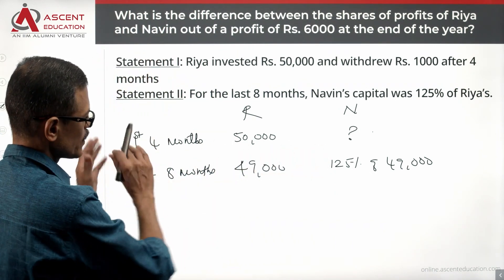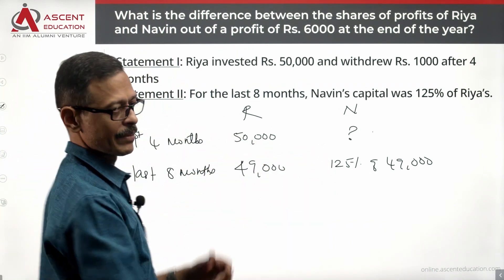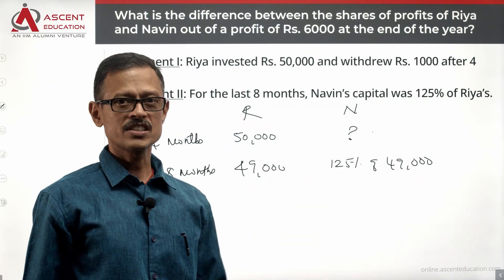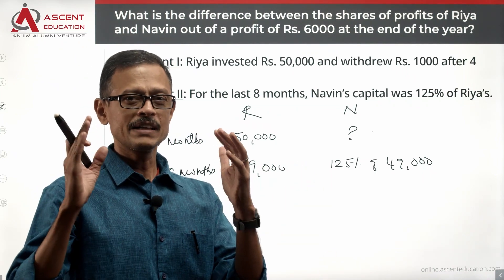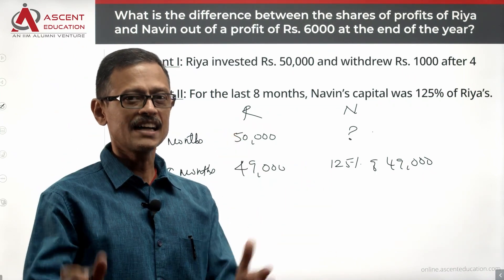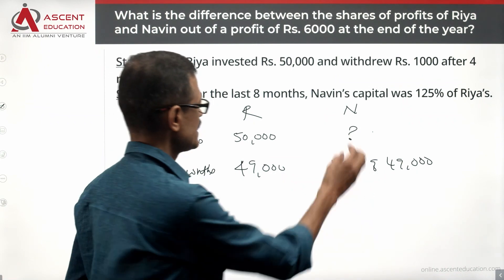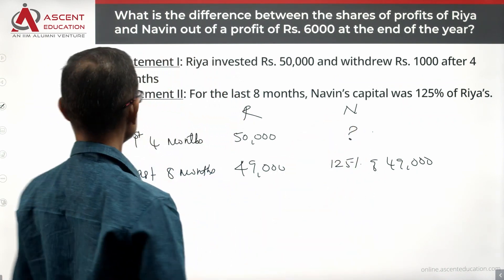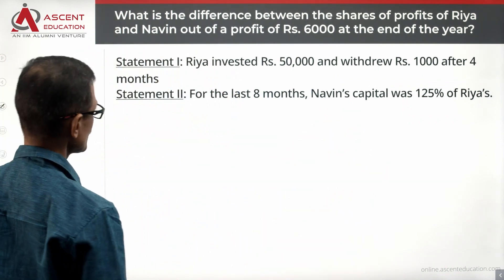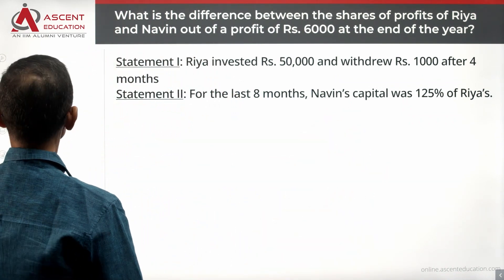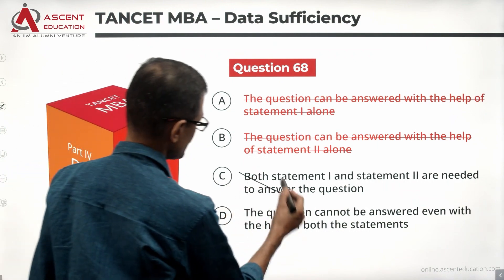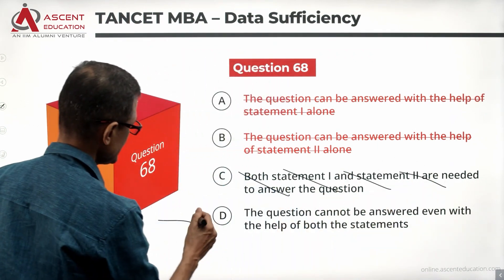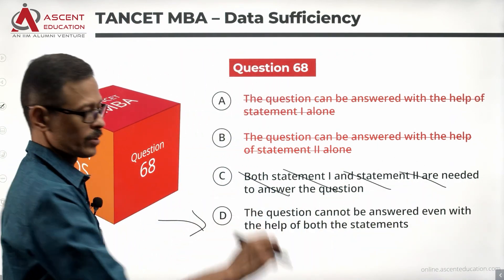We will not be able to find out the ratio in which they should divide the profits. This is a data sufficiency question and the data is not sufficient. The statements together are not sufficient — eliminate answer option C as well. Choice D is the correct answer to the question.